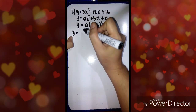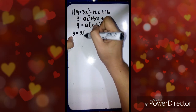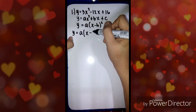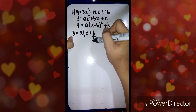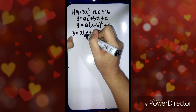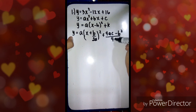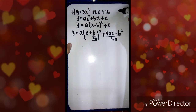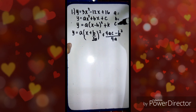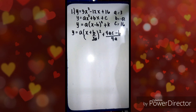In order to transform this into vertex form, we're going to use the easy method, which uses the formula y equals a times the quantity of x plus b over 2a squared, plus 4ac minus b squared over 4a. First, we're going to identify what a, b, and c are. In this example, our a is 3, b is negative 12, and c is 16.